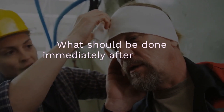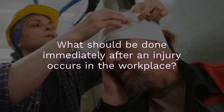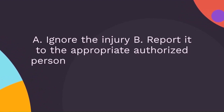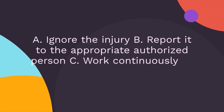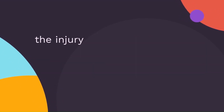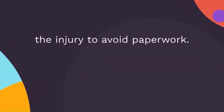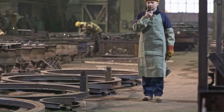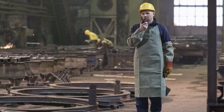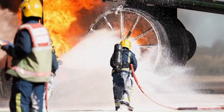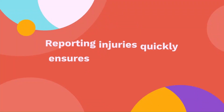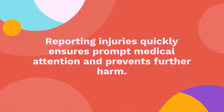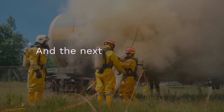Question 24: What should be done immediately after an injury occurs in the workplace? A — ignore the injury, B — report it to the appropriate authorized person, C — continue working as if nothing happened, D — hide the injury to avoid paperwork. The correct answer is report it to the appropriate authorized person. Reporting an injury right away is important because it ensures you get the help you need, just like telling a teacher if you get hurt at school. Reporting injuries quickly ensures prompt medical attention and prevents further harm.